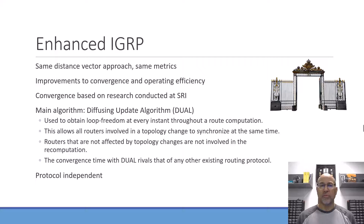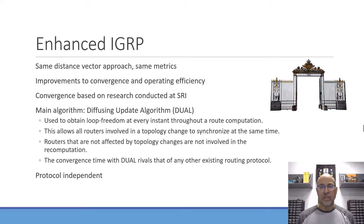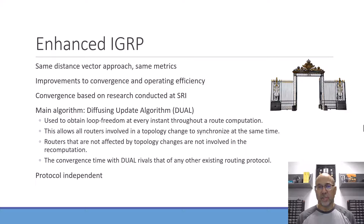Enhanced IGRP is the same animal with improvements to convergence and operating efficiency. Convergence is simply the operation of getting to a stable topology where you know how to get to all destination networks and have settled into a steady state. This convergence was based on research conducted at SRI. The algorithm behind it, the diffusing update algorithm or DUAL, has efficiencies because not everybody needs to recalculate connections to every destination, and it uses a hello protocol to stay up to date.